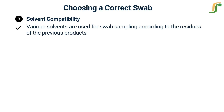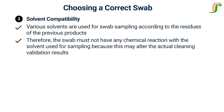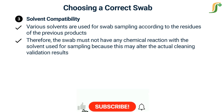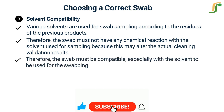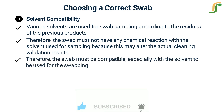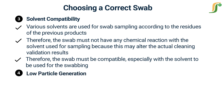Third is solvent compatibility. Various solvents are used for swab sampling according to the residues of the previous products. Therefore, the swab must not have any chemical reaction with the solvent used for sampling, as this may alter the actual cleaning validation results. The swab must be compatible especially with the solvent to be used for swabbing.